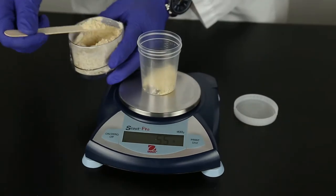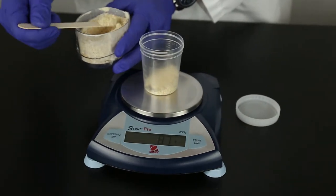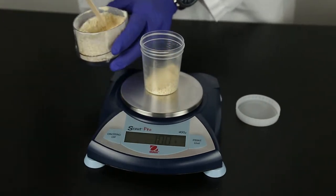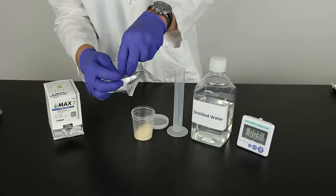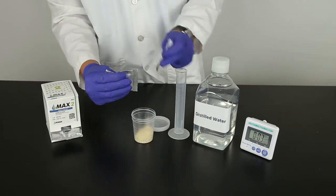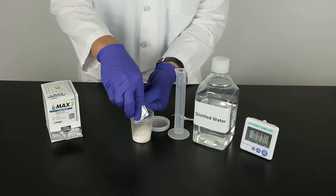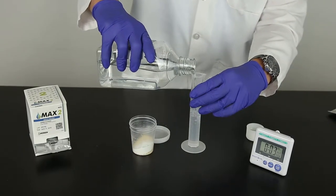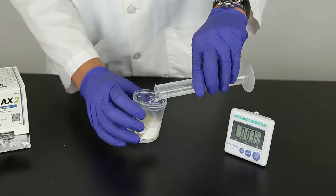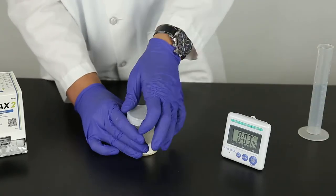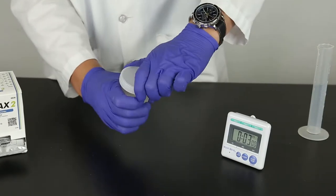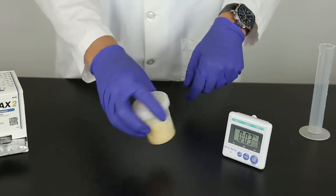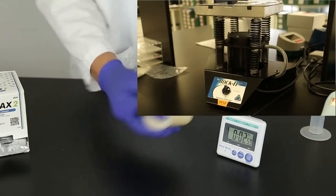Weigh out 10 grams plus or minus 0.1 gram of sample in a sample collection cup. Add the contents of one Max 2 aqueous extraction packet to the cup. Add 50 milliliters of distilled or deionized water to the cup. Cap tightly, then shake to moisten the entire sample. Vigorously shake by hand or mechanical means for three minutes.